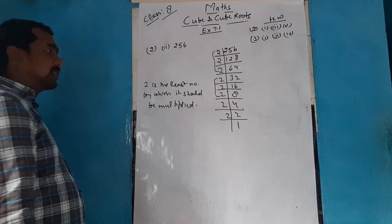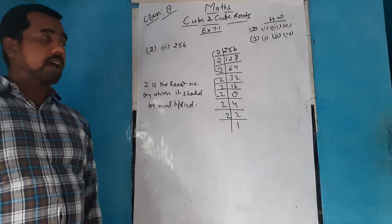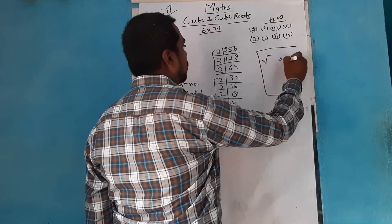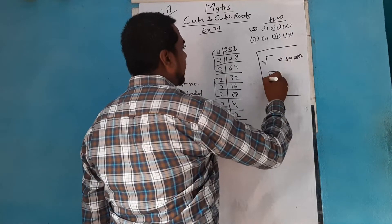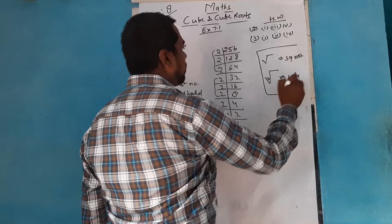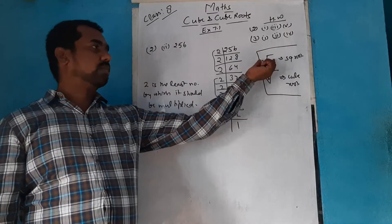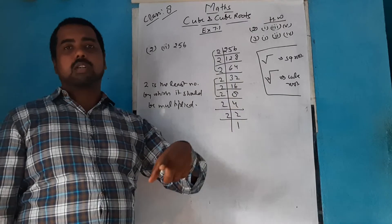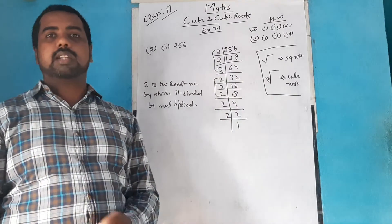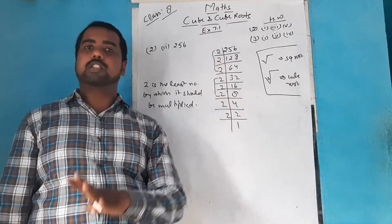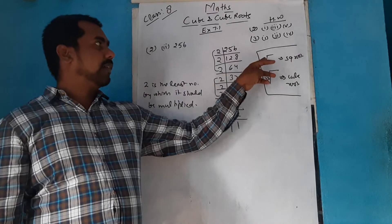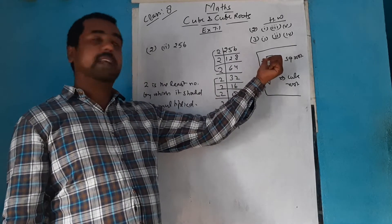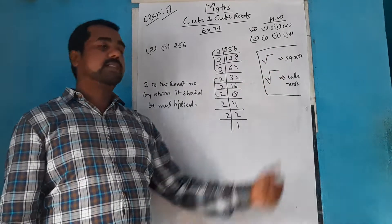Although it is not asked here, let me explain the sign of cube root. As you know, this is the sign of square root. Similarly, if you write 3 inside this sign, that becomes the sign of cube root. If nothing is written, it means 2, which is called square root. If 3 is written, it is called cube root; 4 is called fourth root; 5 is called fifth root; 6 is called sixth root, and so on.